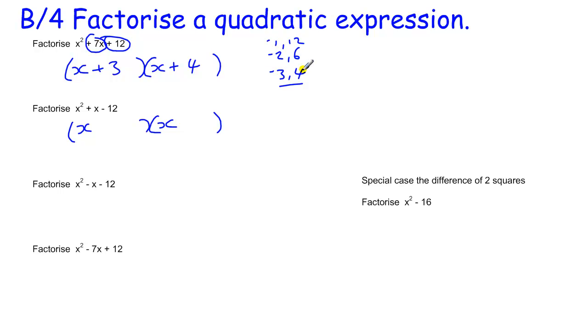And which of these combinations add to give me plus x? Well, it's minus 3 and plus 4. So that would be minus 3 and this would be plus 4.